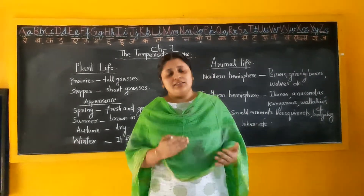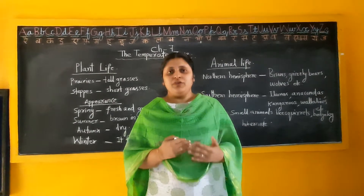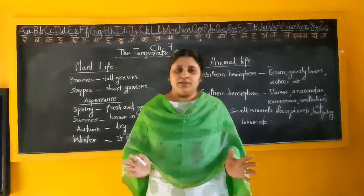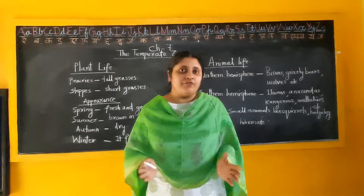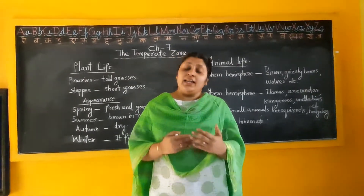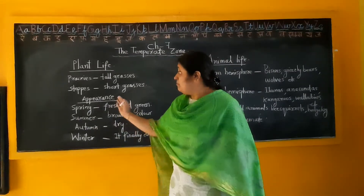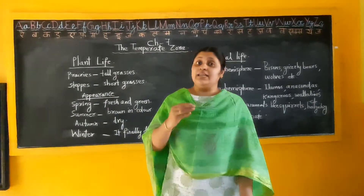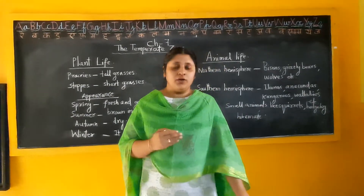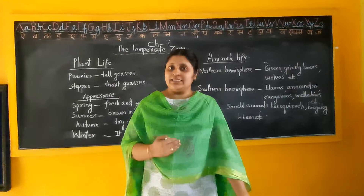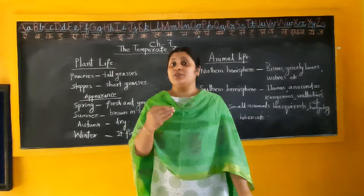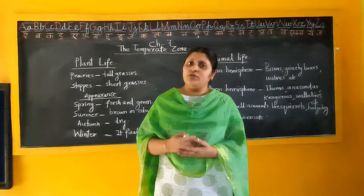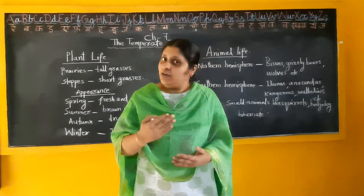In the northern and southern temperate grasslands, every grassland is entirely different from others. In the northern hemisphere grasslands, mainly in the prairies, the grasses are tall — because they receive sufficient rainfall, which is why the grasses grow tall.